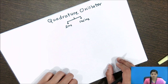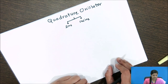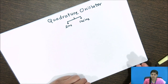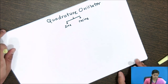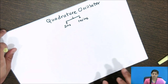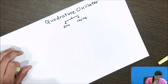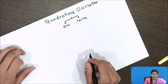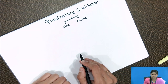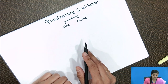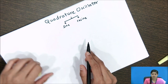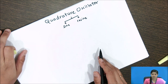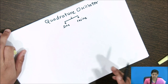Quadrature oscillators are widely used in telecommunication circuits for measurement purposes such as special purpose voltmeters. For the quadrature oscillator circuit, we require two operational amplifiers as well as three RC networks.